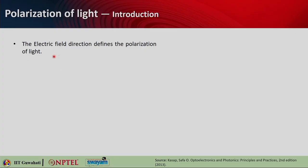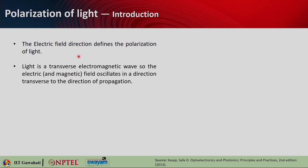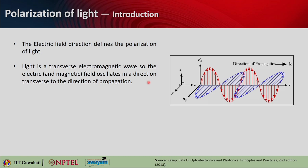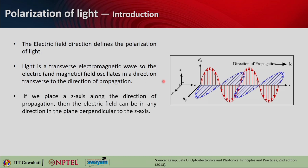Let us introduce the topic of polarization of light. When we talk about polarization, we are mainly concerned about the electric field direction — the electric field direction defines the polarization of light. We all know that light is basically a transverse electromagnetic wave, so the electric and magnetic fields oscillate in a direction which is transverse to the direction of propagation.